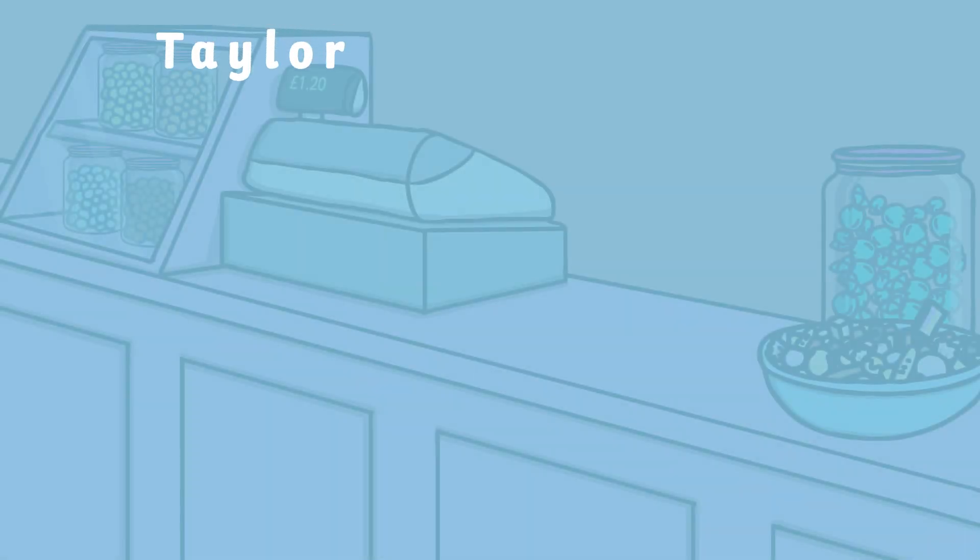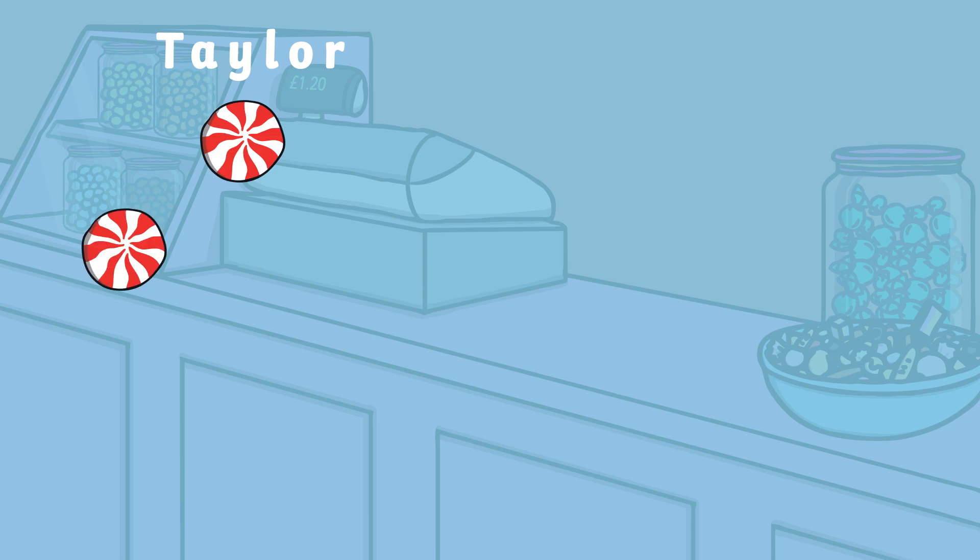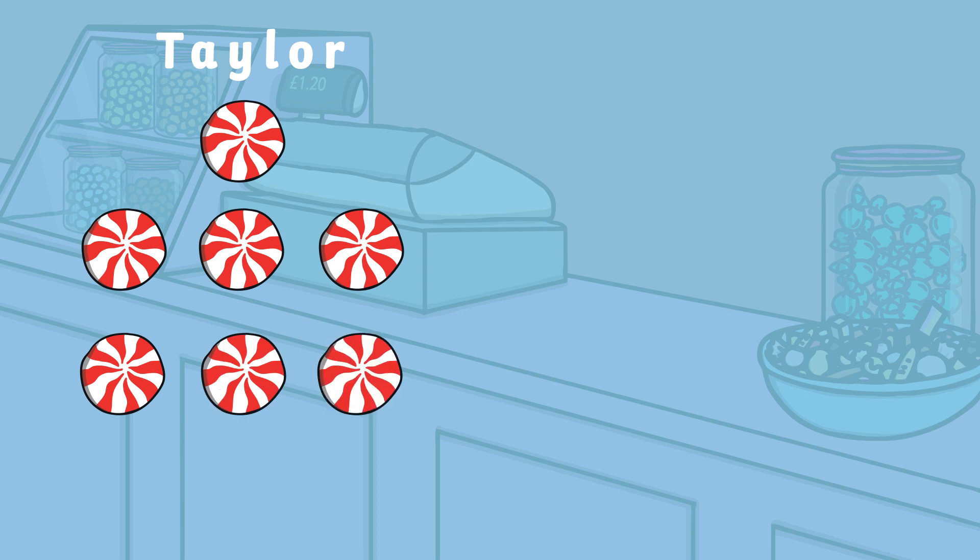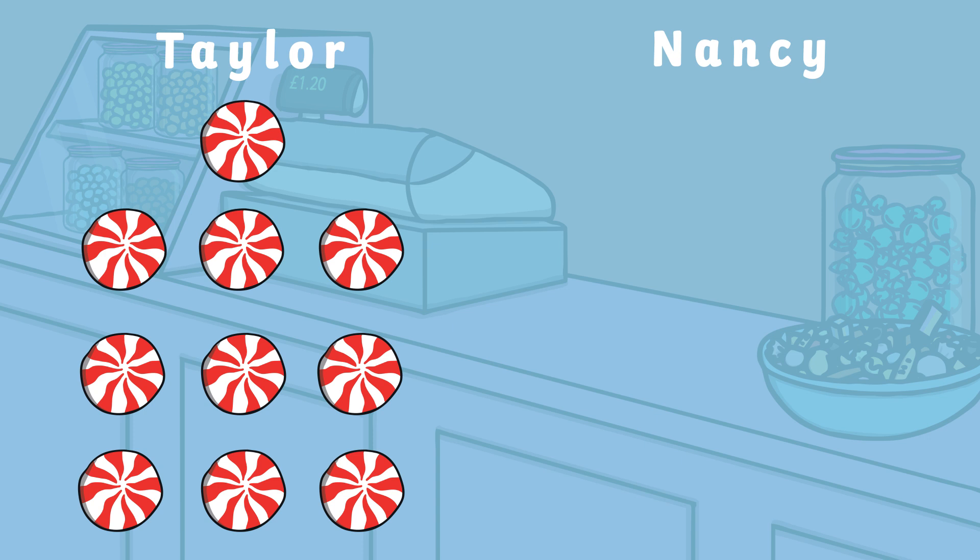Taylor has 10 sweets. 1, 2, 3, 4, 5, 6, 7, 8, 9, 10. He decides to give away 6 sweets to Nancy.